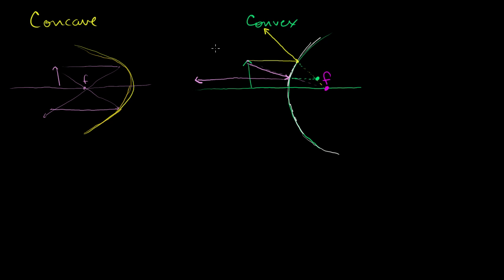Not only does it look like they're coming from a point on the other side of the mirror, but the actual image will look like that. We could do it with other points on this arrow. Light that goes straight to the actual mirror will be reflected straight back, looking like it's coming from a point behind the mirror. When you're dealing with a convex parabolic mirror, the outside is the reflective surface. You're not going to form a real image — you're going to form a virtual image.